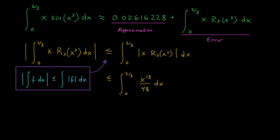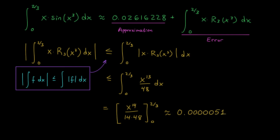Evaluating this integral, an antiderivative is x¹⁴/(14·48), evaluated from 0 to 2/3. Punching this into a calculator gives approximately 0.0000051 — a very, very small error term. In particular, there are five zeros after the decimal point, which means this approximation is accurate to at least the fifth decimal place. Pretty neat.